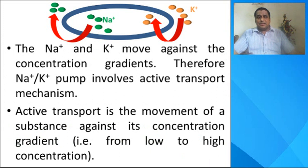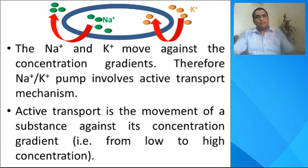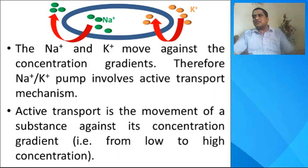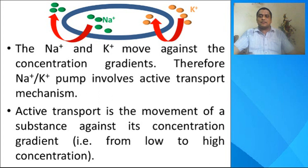Another key point is that sodium and potassium ion movement acts against the concentration gradient. The sodium ion concentration inside the cell is lower and higher outside the cell, yet the sodium ion is being pumped from inside to outside — from low concentration to high concentration. Ideally, ion flow should be from high concentration to low concentration, but here the reverse is happening; ions are being pumped against the concentration gradient. That is why it involves active transport — the movement of a substance or ion against its concentration gradient, from low to high concentration.